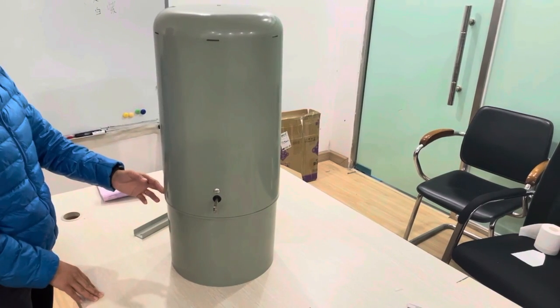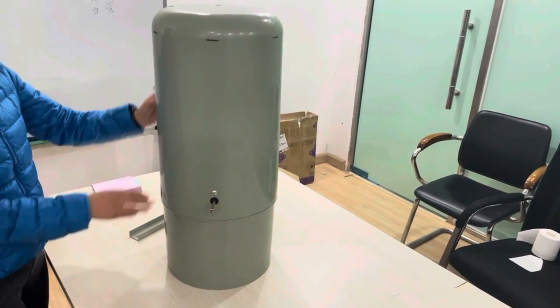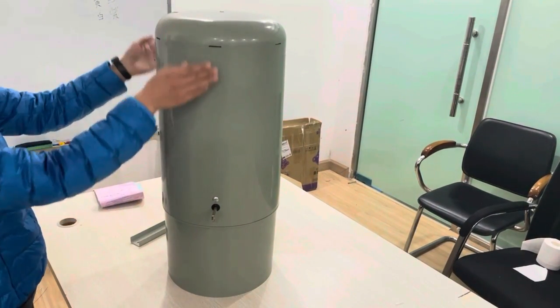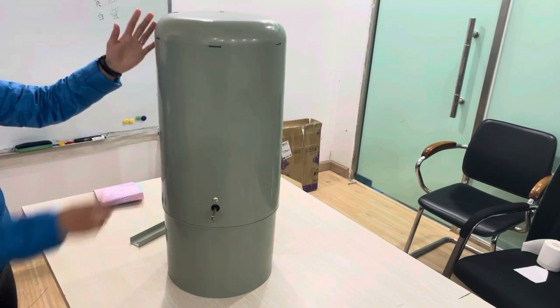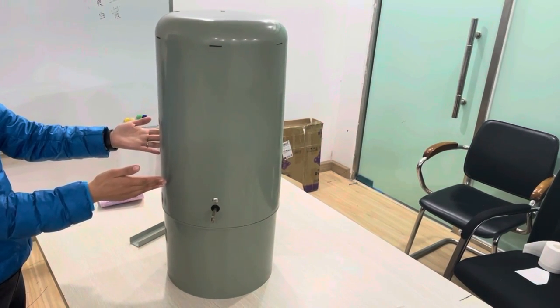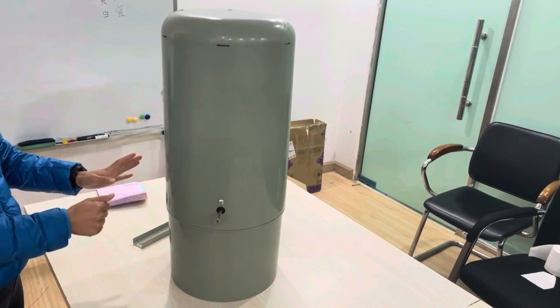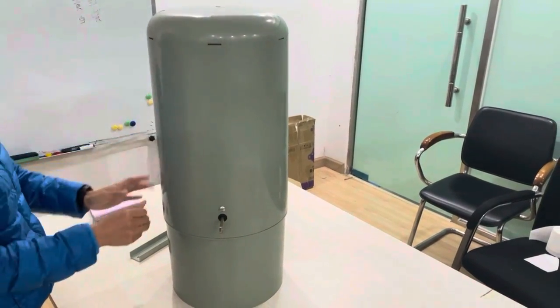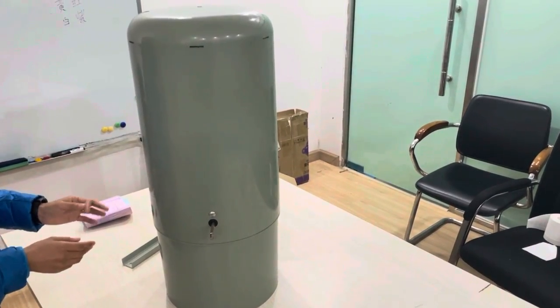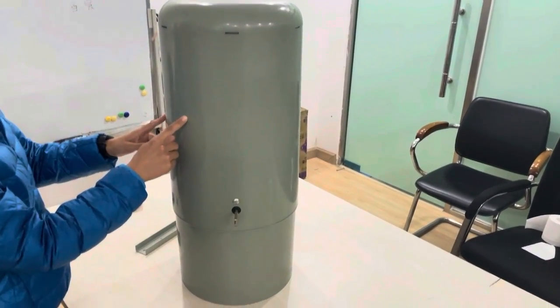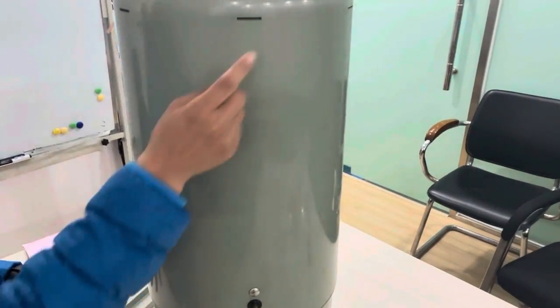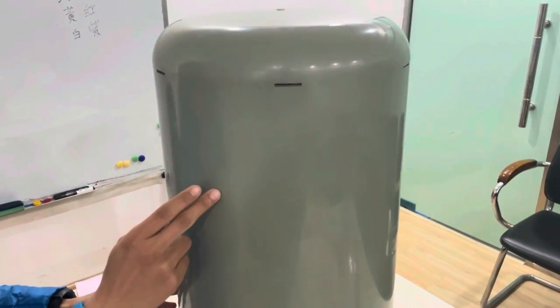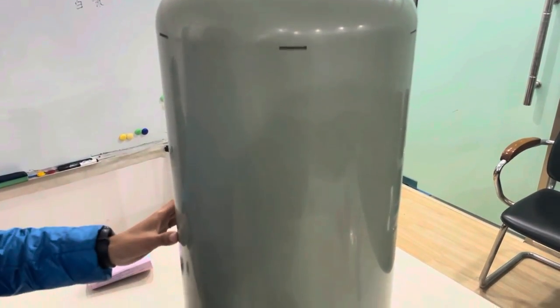Now I would like to show you the advantages of this cabinet. First, you can see the design is a dome type, like a dome. It's round and square, it's a dome type. And so it can protect the inside from the water and rain.